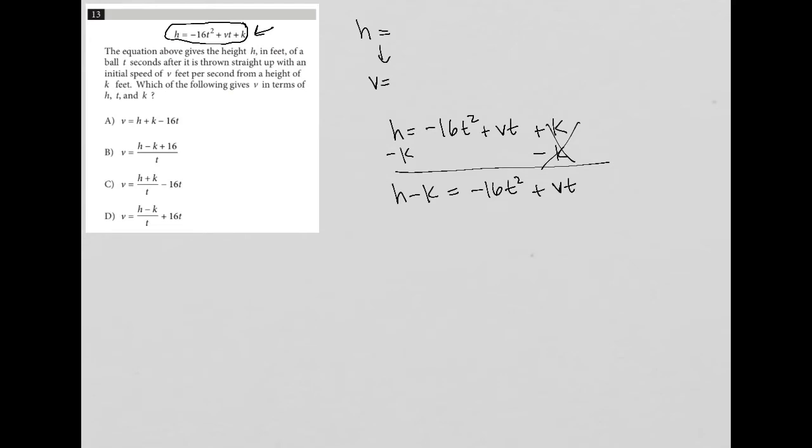Now why is this already helpful? This is already helpful because I see that I should have the difference between h and k. And it looks like choice A and C both have the sum of h and k. So I'm already down to a 50-50 on this.